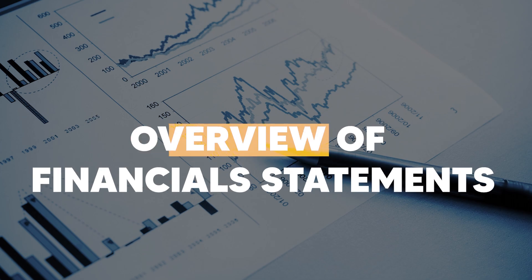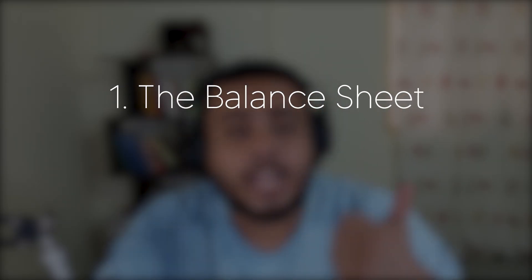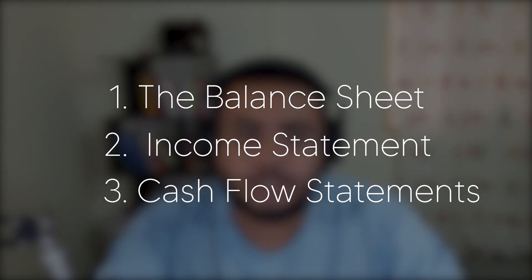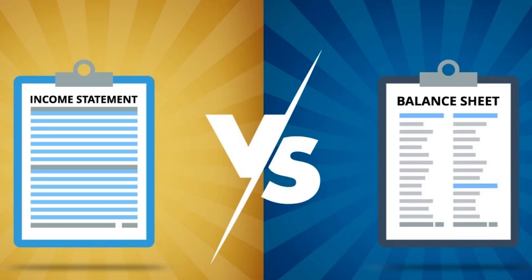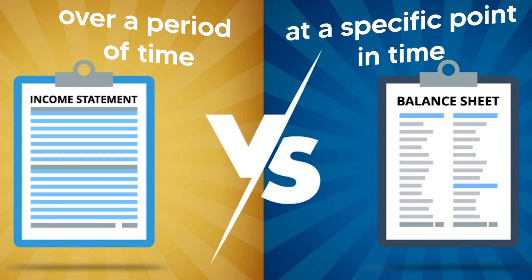A company mainly has three financial statements: the balance sheet, the income statement, and the cash flow statement. One of the main differences between a balance sheet and an income statement is that the income statement shows a company's performance over a certain period of time, and the balance sheet shows the company's position at a certain point in time.